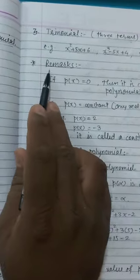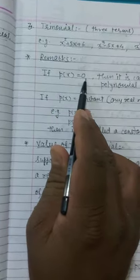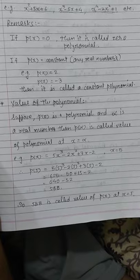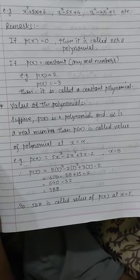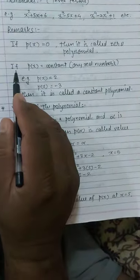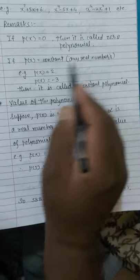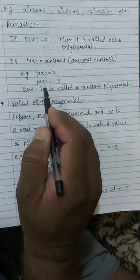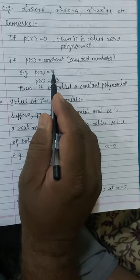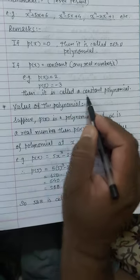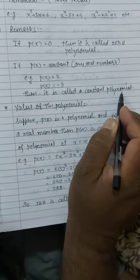Some remarks: if p(x) = 0, it is called a zero polynomial — when there is no term in the polynomial, it is a zero polynomial. Second remark: if p(x) equals a constant — for example p(x) = 2 or p(x) = minus 3 — these are constant numbers, so if a polynomial contains only a constant, it is called a constant polynomial.